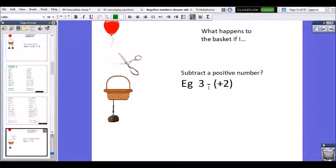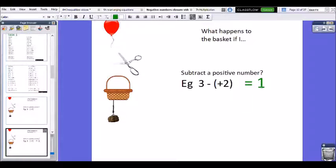This means if I subtract a positive number, so if I take away a balloon, my number gets smaller. So 3 take away positive 2 would give me 1. Taking away a positive is the same as a negative, it's the same as a subtraction. So 3 take away 2 gives me 1.